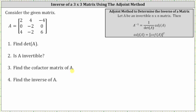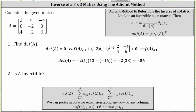We will perform cofactor expansion on row two because row two has two zero entries. Starting with the first entry in row two, the determinant of matrix A is equal to zero times cofactor two comma one. Because we have a zero in their product, we don't have to find cofactor two comma one. So we move along to the second entry in row two, which is negative two.